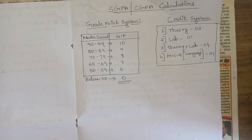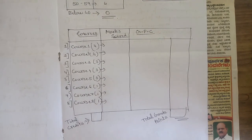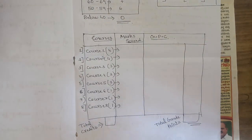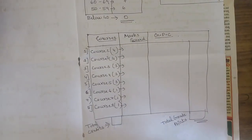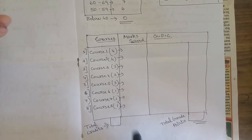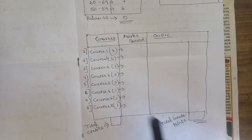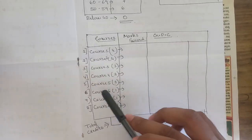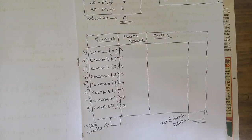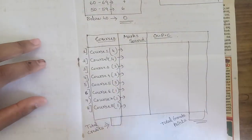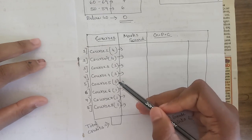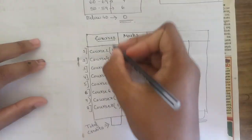Now let's get to the calculation part. In a particular semester, let us assume you have 8 subjects or courses. I have written the credits for each course in brackets. Course 1 has 4 credits (theory + lab), Course 2 has 4 credits (theory + lab), Courses 3, 4, and 5 have 3 credits each, and Courses 6, 7, and 8 have 1 credit each. Adding all credits: 4+4+3+3+3+1+1+1 = 20 total credits.